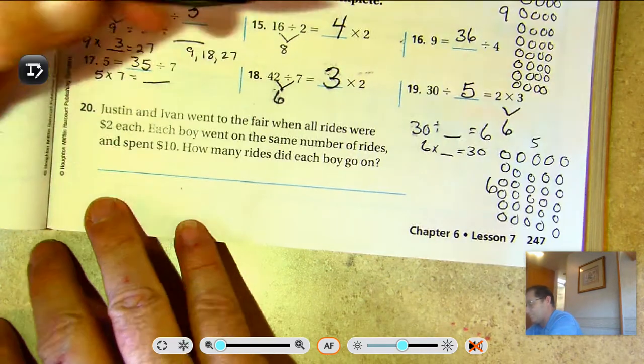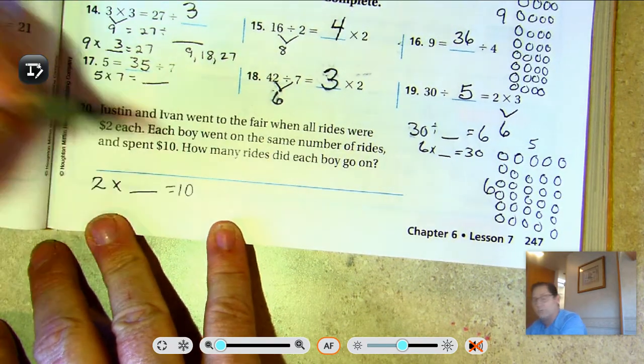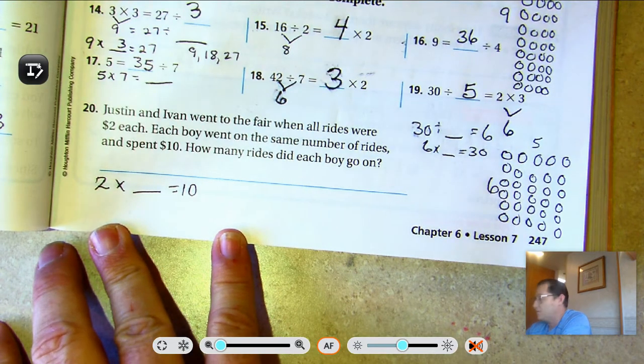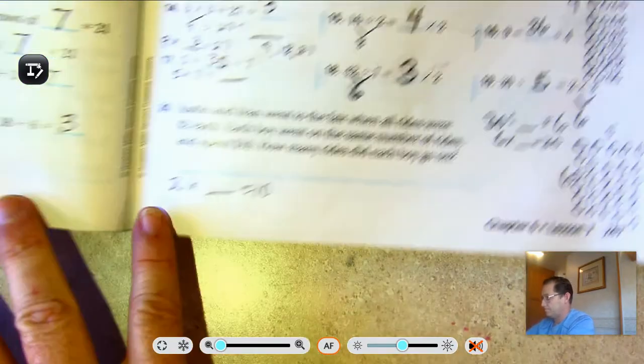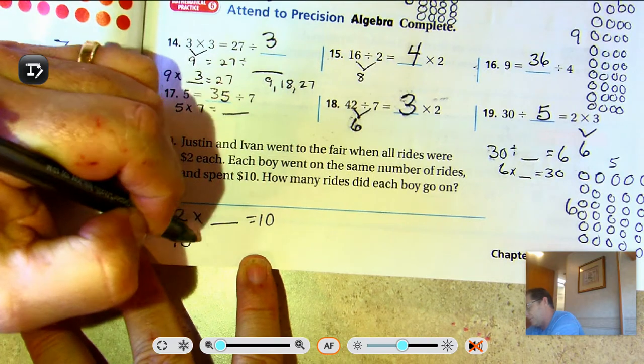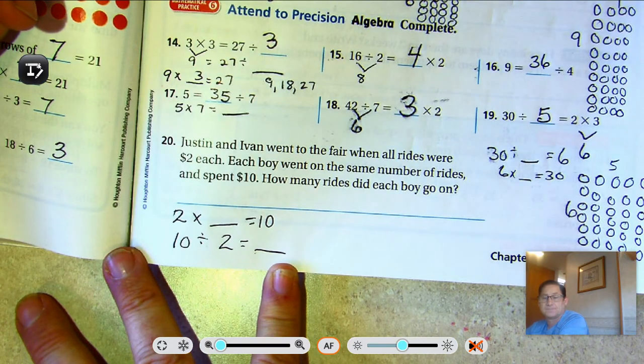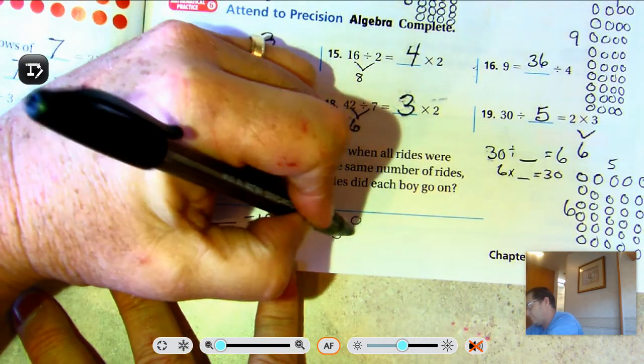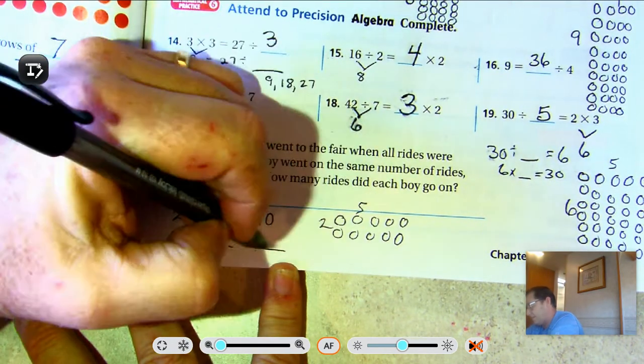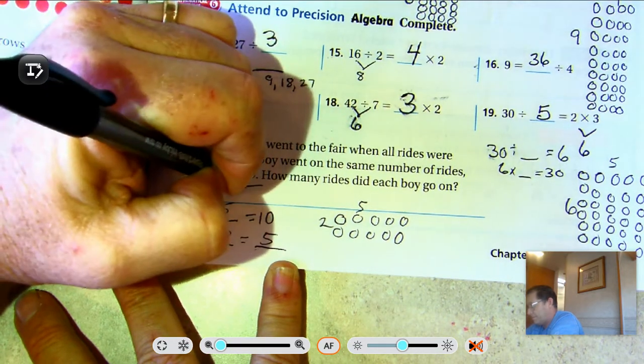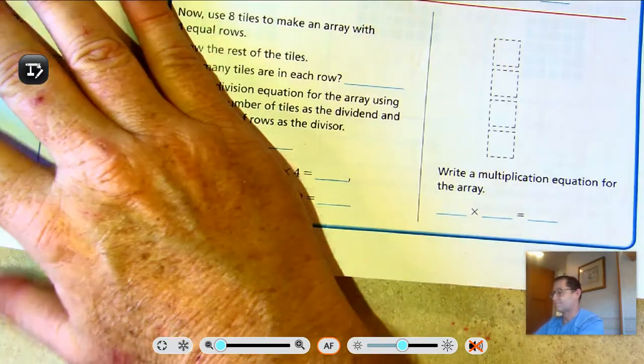Alright, so 2 times something equals 10. They spent $10 on the rides. And each ride costs $2. So we could also say $10 divided by 2 equals how many rides? Counting by twos: 2, 4, 6, 8, 10, five. So 2 rows of 5. 5 rides.